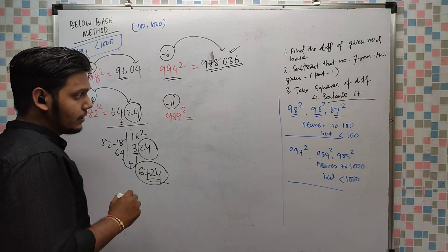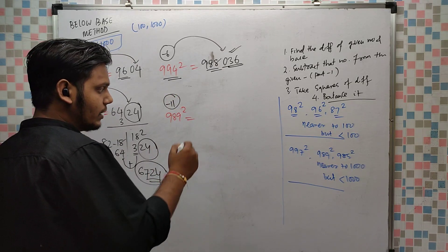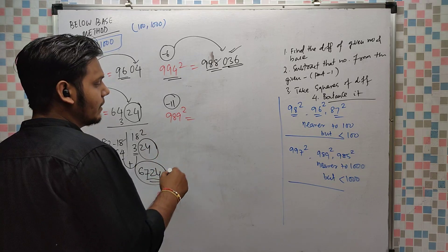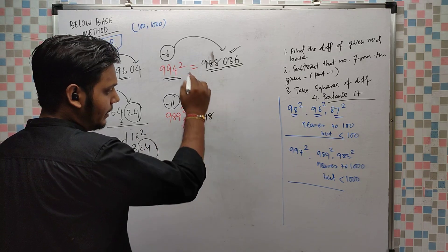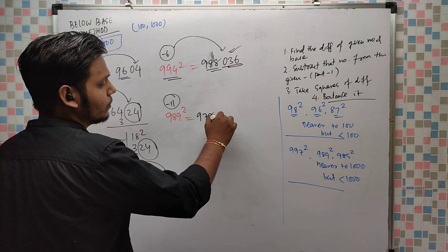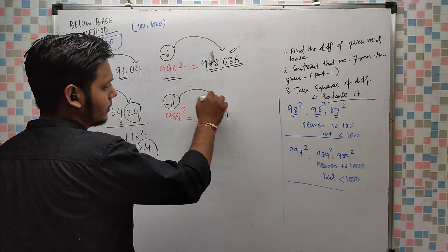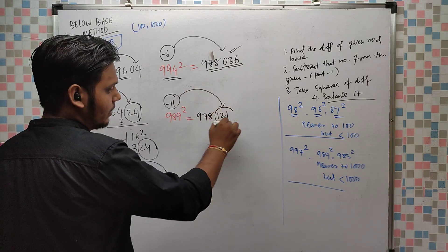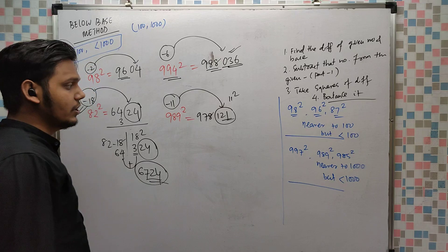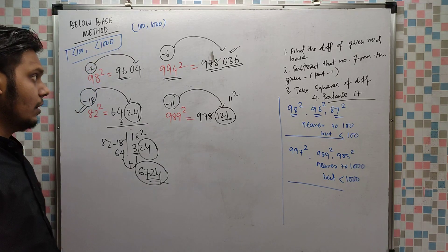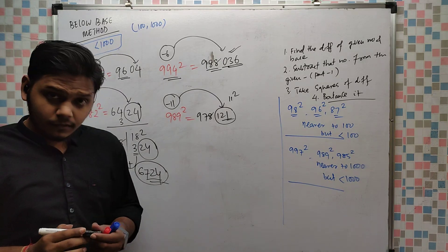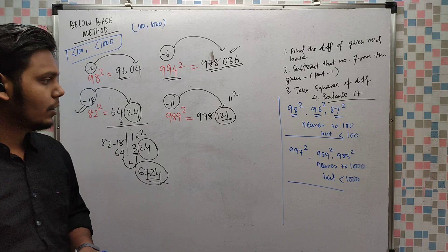For 989²: 989 is 11 less than 1000. So 989 minus 11 is 978, and 11² is 121 — already 3 digits, so no adjustment needed. The answer is 978121.